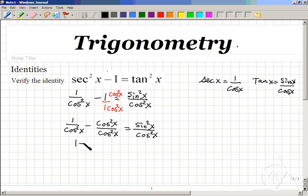the numerator becomes 1 minus cosine squared x over cosine squared x, which we wish to show equals sine squared x over cosine squared x.